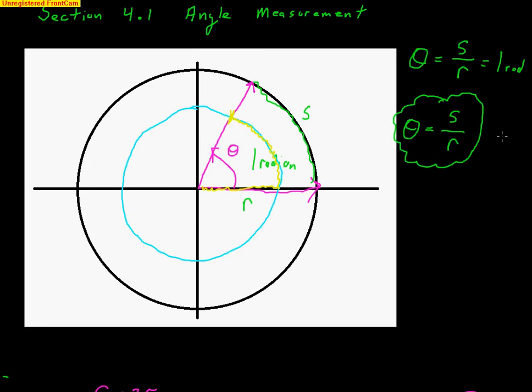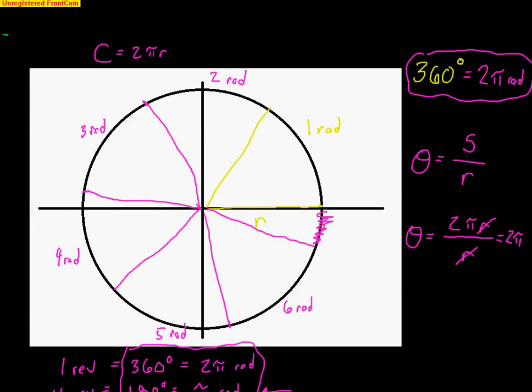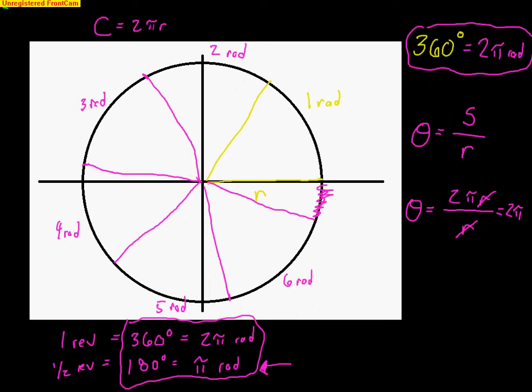This picture best represents what one radian truly is — when the arc length S is equal to the radius R of any size circle. The other picture shows the different ways to think about how many radians go into a circle, and the exact number is 2π.